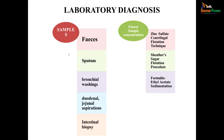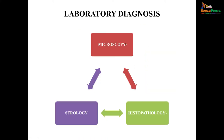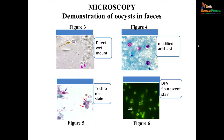For lab diagnosis, the main samples are feces, or sputum in case of respiratory disease, bronchial washings, duodenal or jejunal aspirations, or intestinal biopsy. For feces, concentration should be done before trying to detect the organism — zinc sulfate centrifugal flotation, Sheather's sugar flotation, or formal-ether concentration. Lab diagnosis is based on three approaches: microscopy, serology, and histopathology. Microscopy means demonstration of oocysts in feces by direct wet mount, acid-fast stain where pink cysts are seen, trichrome stain, or direct fluorescent stain with great sensitivity.